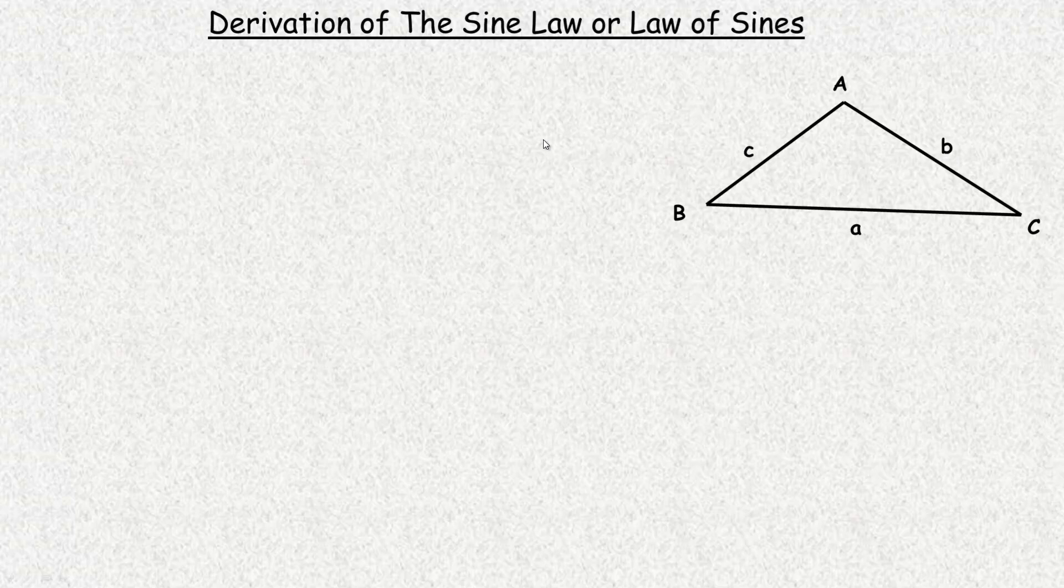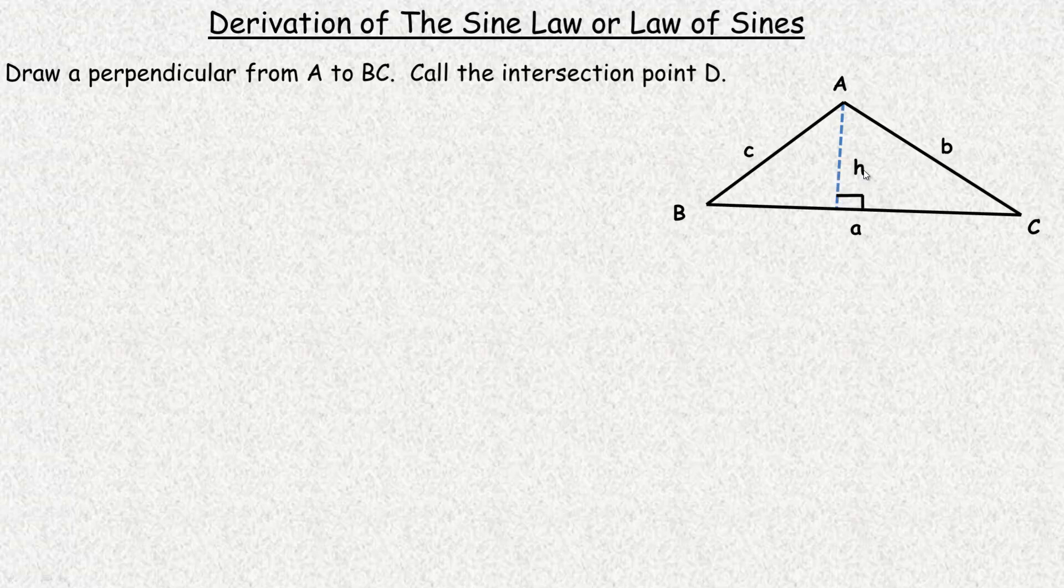We're going to make a construction of the triangle here. We're going to draw a perpendicular from A down to BC. So here's my perpendicular, I'm going to call that H. So it's perpendicular to BC, so it's going to cut this into two triangles. This one here I'm going to call the intersection point D, so the ABD triangle and the ACD triangle.